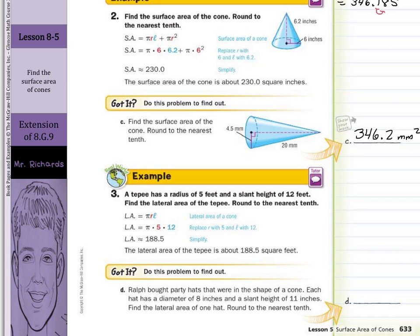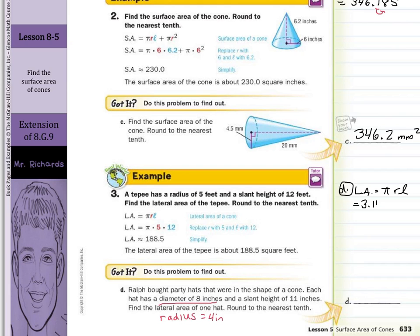Ralph bought party hats that were in the shape of a cone. Each hat has a diameter of 8 inches and a slant height of 11 inches. Find the lateral area of one hat, round to the nearest tenth. And again, this is where we have to pay attention to our reading — the diameter is 8 inches, which means we have a radius of 4 inches. LA equals pi times the radius times the slant height: 3.14 times 4 times 11. Multiply the three numbers together and we get 138.16. When I round to the nearest tenth, the 6 is going to round the 1 up — so 138.2 inches squared.